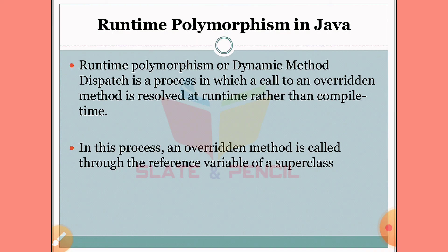If we call an overridden method at runtime, this process is called runtime polymorphism. The method resolution happens dynamically during program execution.